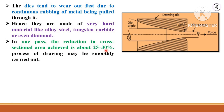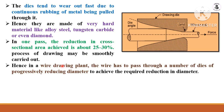In one pass, the reduction in cross-sectional area achieved is about 25 to 30 percent. If more reduction in diameter is required, a double-pass system is arranged. Hence in a wire drawing plant, the wire has to pass through a number of dies of progressively reducing diameter to achieve the required overall reduction.